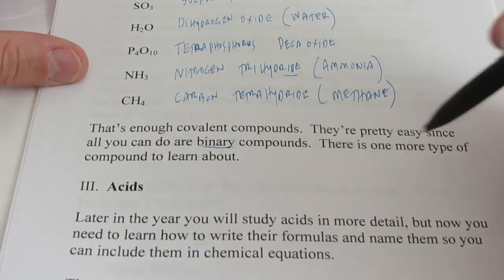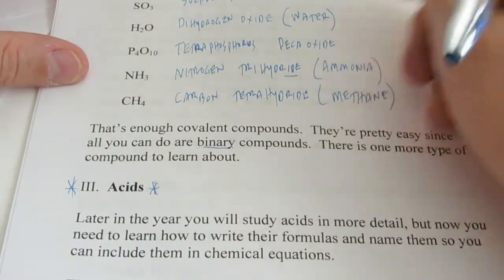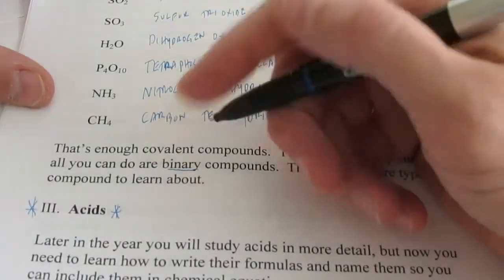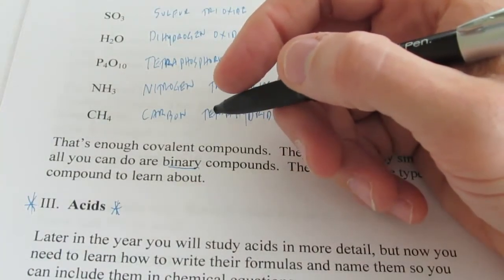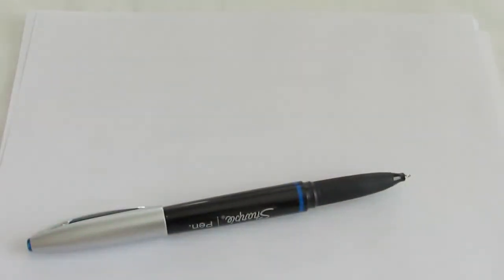Now, there's one more type of compound, and we're going to talk about that in the last video here. And that will be on naming and writing formulas for acids. But I think, before I go on to that, I think I'd like to take a look at assignment 22 for you, and maybe work a couple of problems in that assignment.